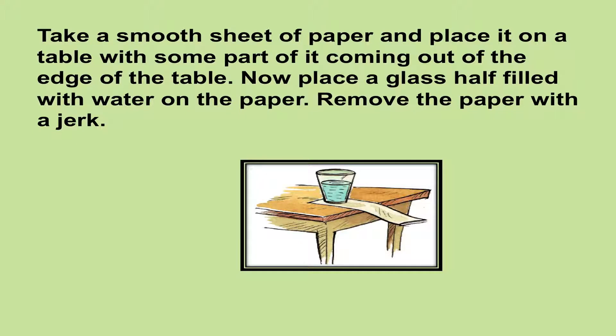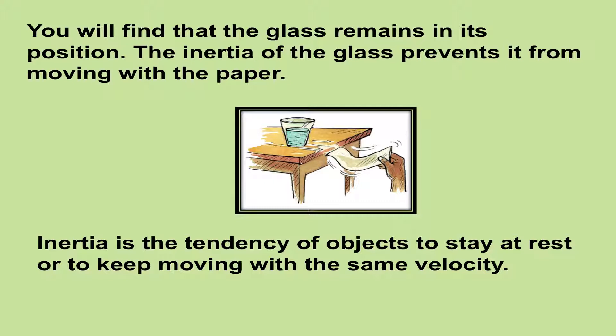What is inertia? You can understand the property of inertia by doing a simple activity. Take a smooth sheet of paper and place it on a table with some part of it coming out of the edge of the table. Now place a glass half filled with water on the paper. Remove the paper with a jar. You will find that the glass remains in its position. This inertia of the glass prevents it from moving with the paper. Thus, we can say that inertia is the tendency of objects to stay at rest or to keep moving with the same velocity.